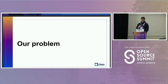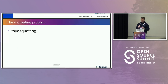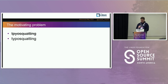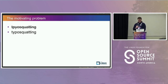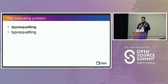The problem that Shopify had was typo squatting — which is the most frequent, numerically speaking, attack on supply chains, mostly because it's so easy to do. But it's very annoying. You're running a large company, you have thousands of developers, and it's very easy for one of them to fat finger something and then you're in trouble.